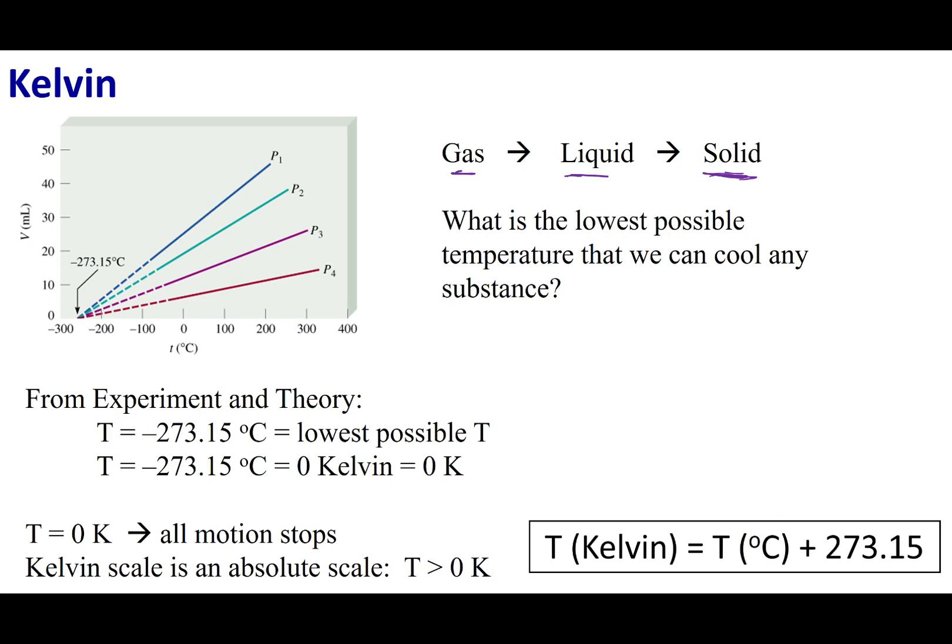As you cool something, you get less and less movement in your particles. The question becomes: is there a point where all motion stops? Where particles are completely stationary? If you look at that last graph, we can extrapolate that volume versus temperature line. It doesn't matter what pressure you have, we will cross this zero volume threshold at a certain temperature. That happens to be negative 273.15, which you might know as absolute zero. This is the coldest temperature matter can reach. This is the experiment that showed what absolute zero is.